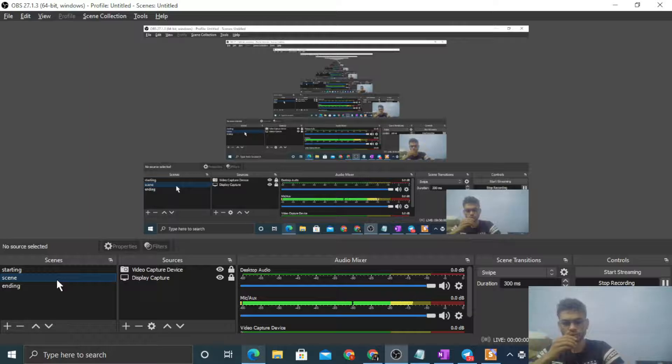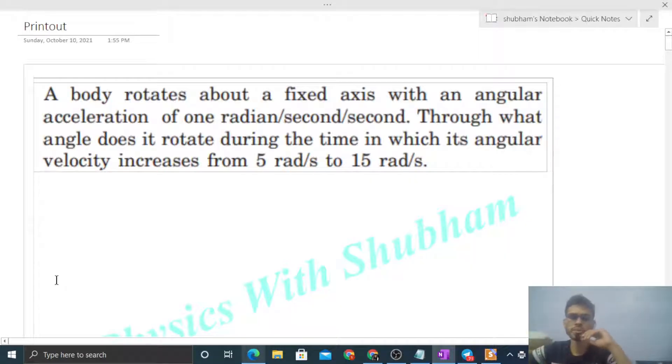Okay, hi everyone. So today let's discuss this interesting problem. It says a body rotates about a fixed axis with an angular acceleration of one radian per second per second. It is one radian per second square, right?